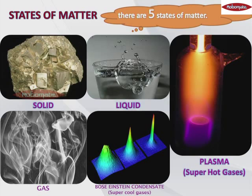In this chapter we are going to deal only in detail about solids, liquids, and gases. We are not going to talk about plasma and Bose-Einstein condensate. But for your information, you should remember that from now onwards there are five states of matter: solids, liquids, gases, plasma, and Bose-Einstein condensate. So let us start in detail about solids.